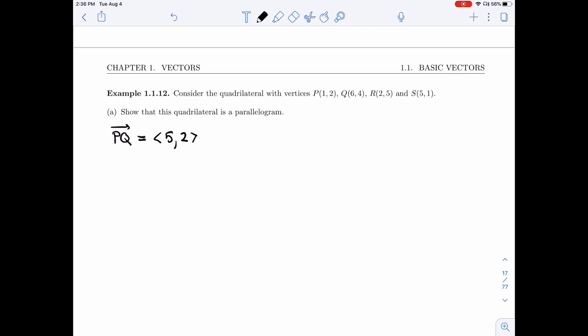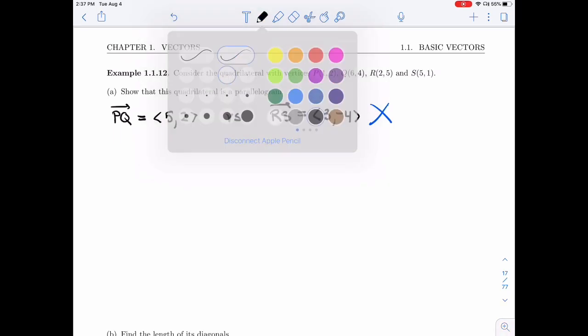If that were to be a side, its opposite side would be RS or SR. So let's try RS and see how it relates to <5, 2>. Now from R to S, I get 3. And from R to S, from 5 to 1, I get minus 4. These are not the same at all. They're in different directions. So if this is a parallelogram, these are not sides of it. So let's try a different combination.